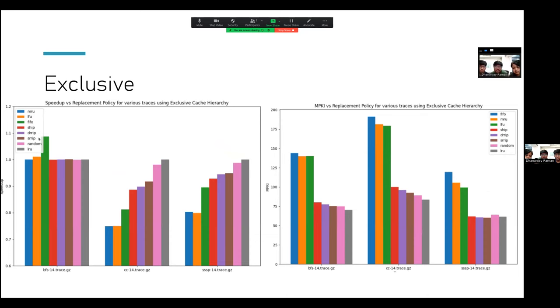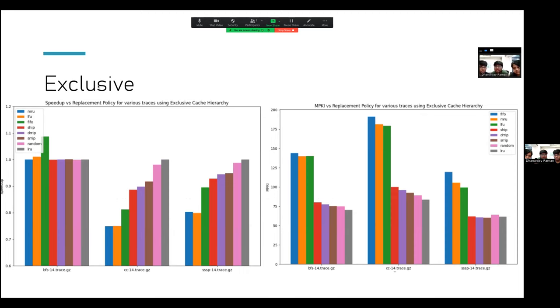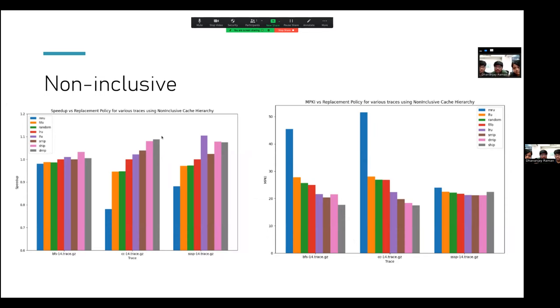Now we'll go over some of these trends and why they are happening. So we expected the frequency based replacement policies to work better than recency based because the latency bottleneck is the high reuse distance, which is repeatedly accessed memory location. But what actually happened was this was only true for non-inclusive cache hierarchy. For exclusive, all the replacement policies perform poorly except LRU. And for inclusive, SHIP works the best. We can see that here. For exclusive, everything except LRU works very badly. For inclusive, SHIP is working better. And for non-inclusive, frequency based policies perform better.